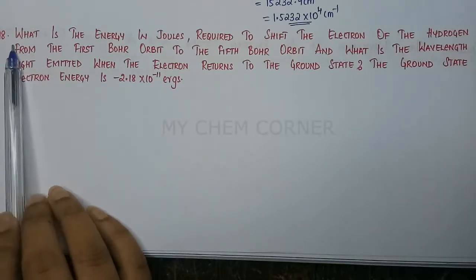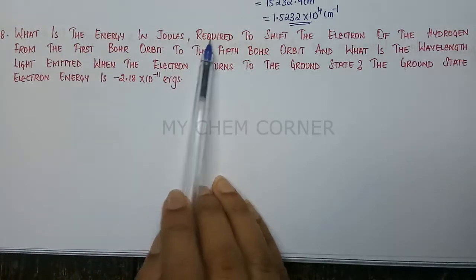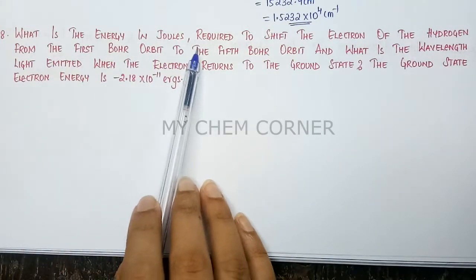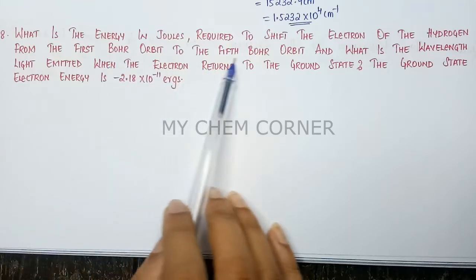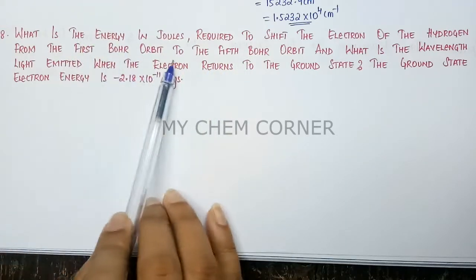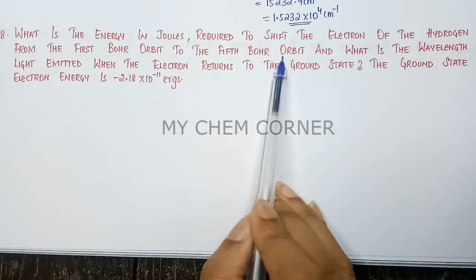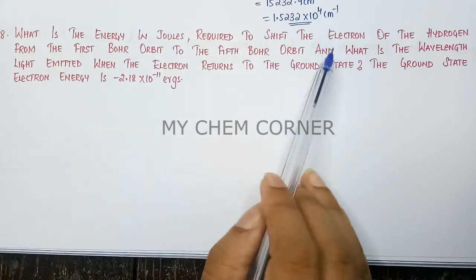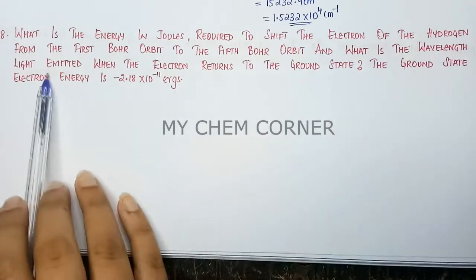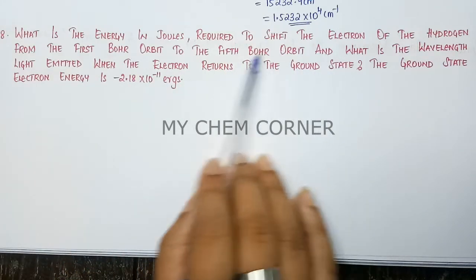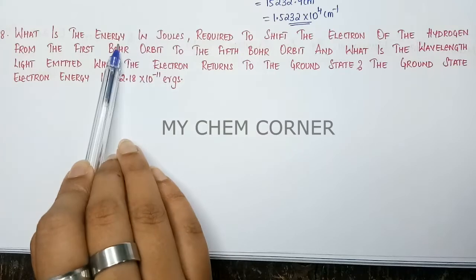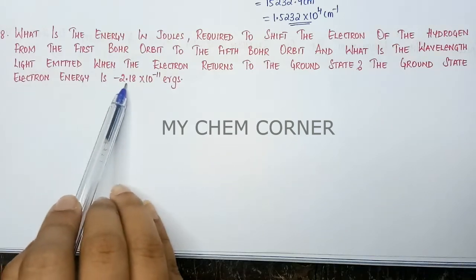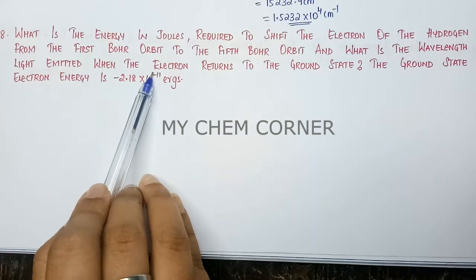Question 2.18 asks: what is the energy in joules required to shift the electron of the hydrogen atom from the first Bohr orbit to the fifth Bohr orbit? The second part asks: what is the wavelength of light emitted when the electron returns to the ground state? The ground state energy of the electron is given as minus 2.18 × 10⁻¹¹ ergs.